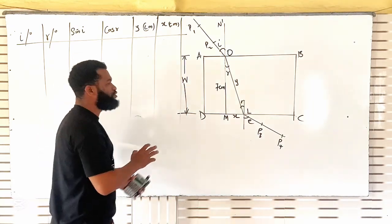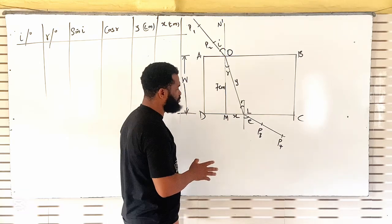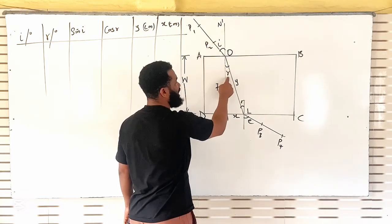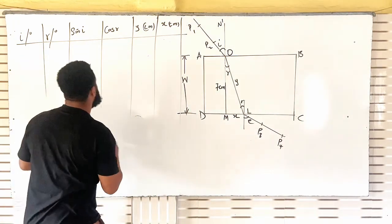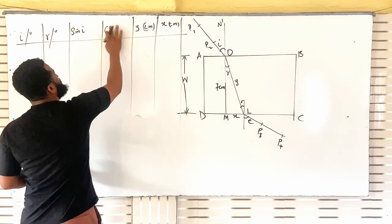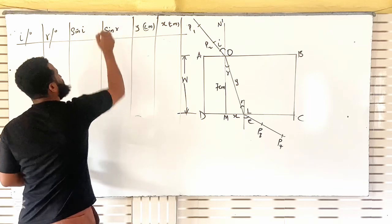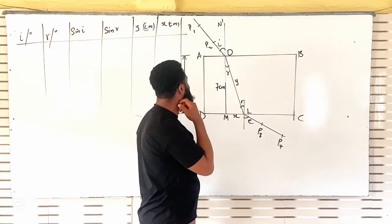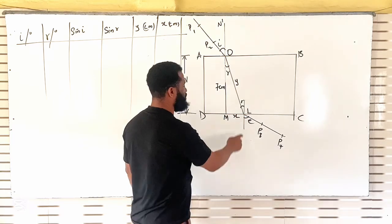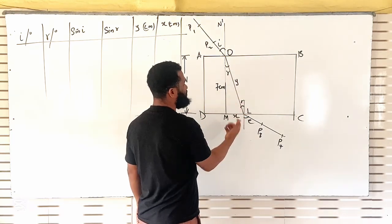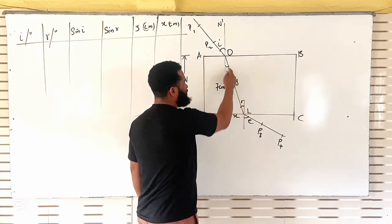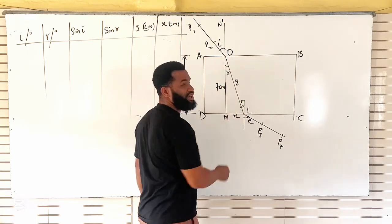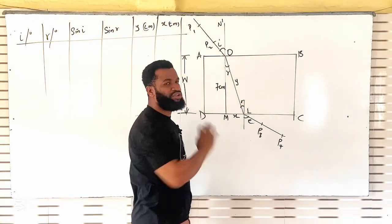Now, in this experiment, I do not know exactly how the question is going to be, but what I know is that sometimes you may be asked to find I against R — that is sine I and sine R. You will also have many things: Y and X. From here to here is Y, and from here to here may be your X. I'm going to show you how to manipulate all these things.